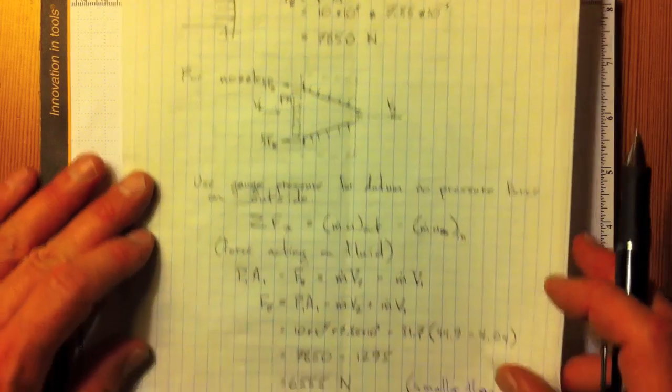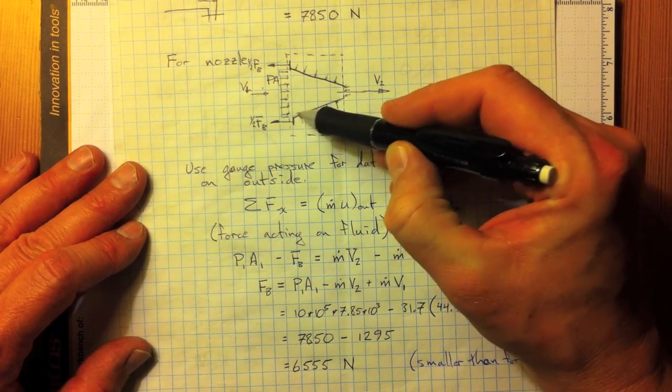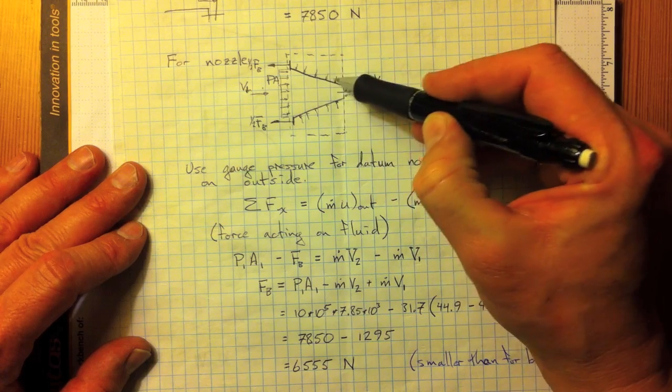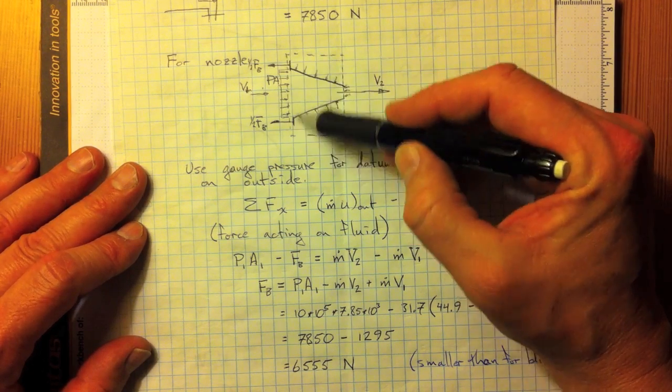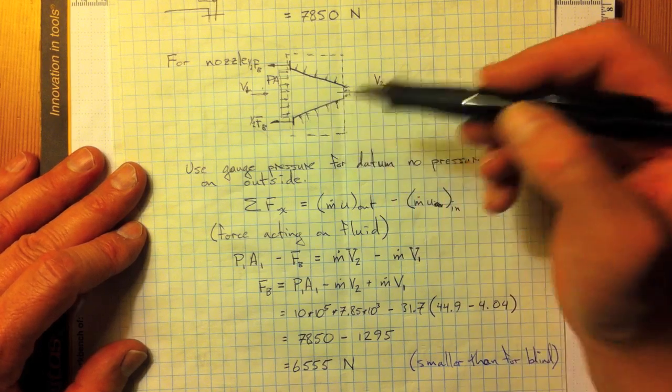So, it's a little bit lower, and we get all of this without needing to know all the details of what's going on inside the nozzle here. Because all that's important is the difference between the momentum coming in, the momentum going out, and the forces applied.